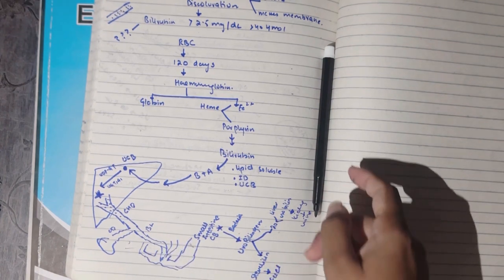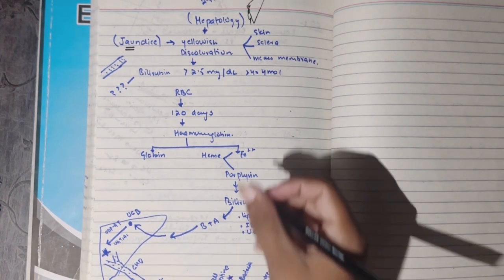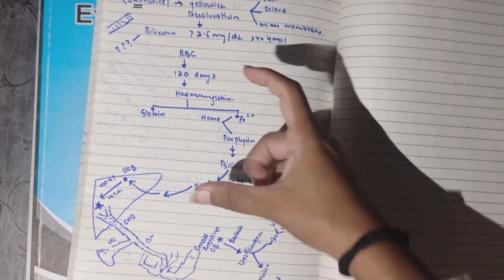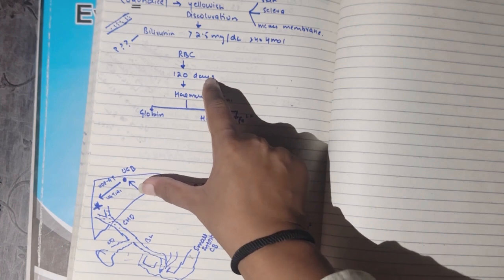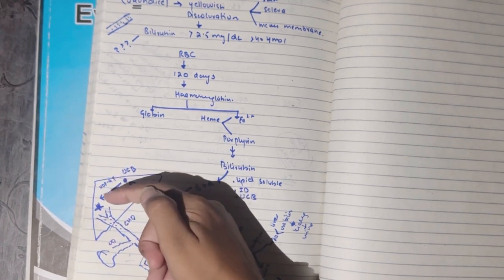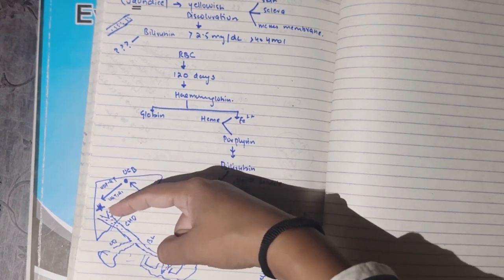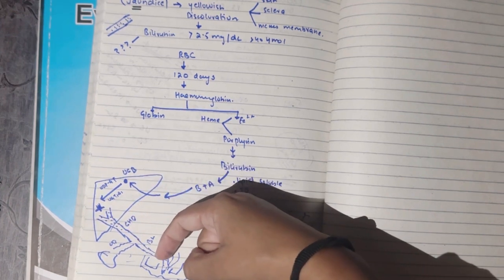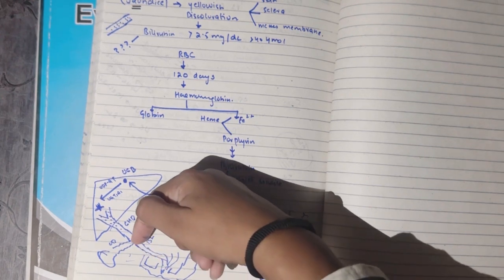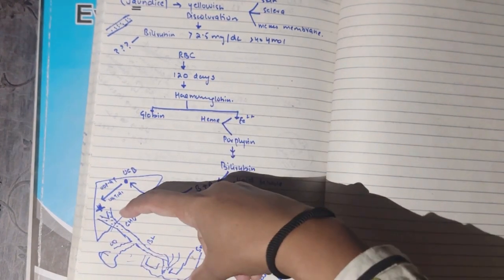Normally bilirubin levels are maintained, but if a patient has elevated bilirubin, we ask: why? We divide the causes into three categories. Number one: pre-hepatic causes — problems occurring before the liver. Number two: hepatic or hepatocellular causes — injury or inflammation at the liver level, such as hepatitis, cirrhosis, or alcoholic liver disease. Number three: post-hepatic causes — conjugation has occurred but bile cannot be transported or excreted further, also called obstructive jaundice.